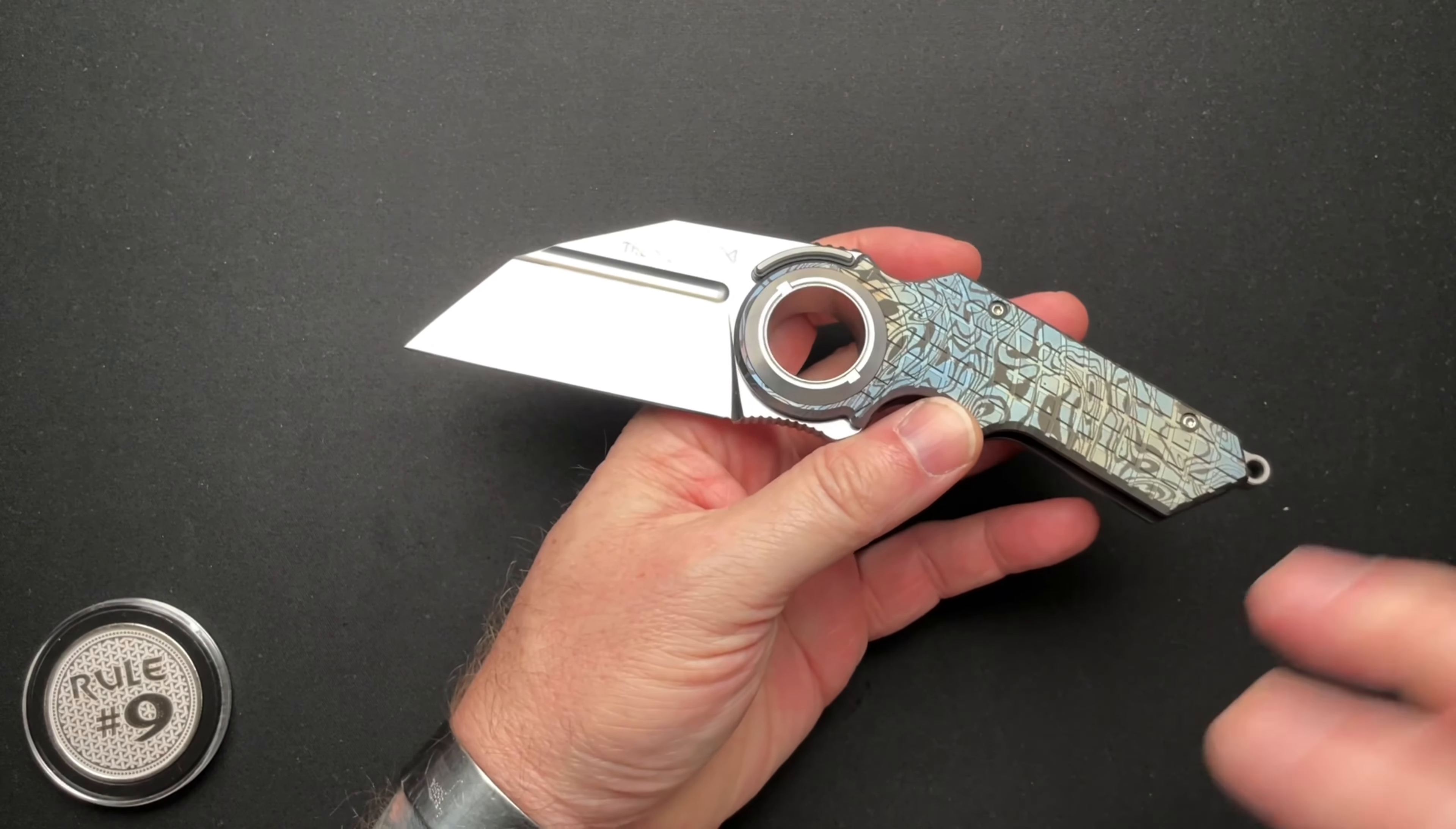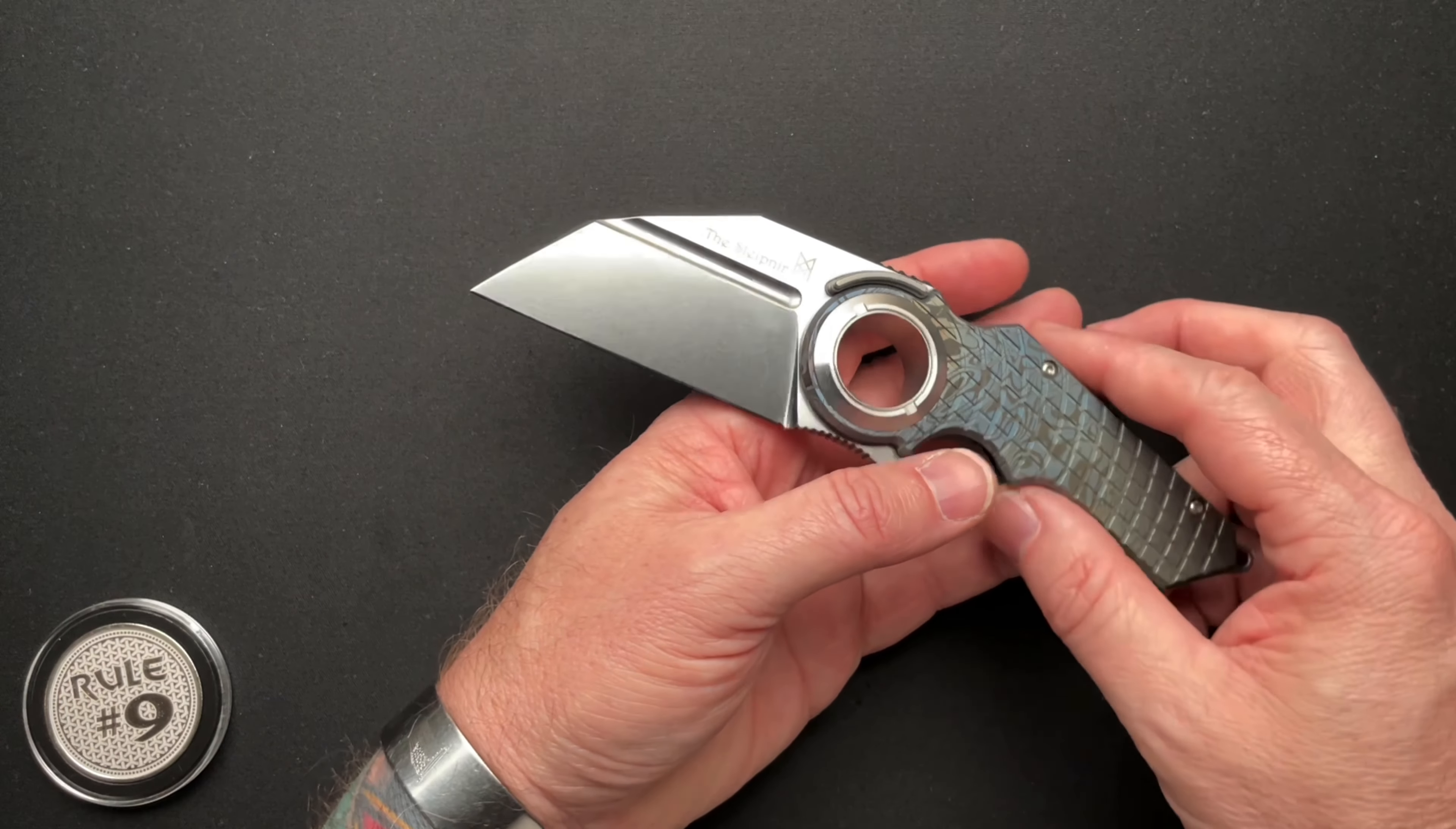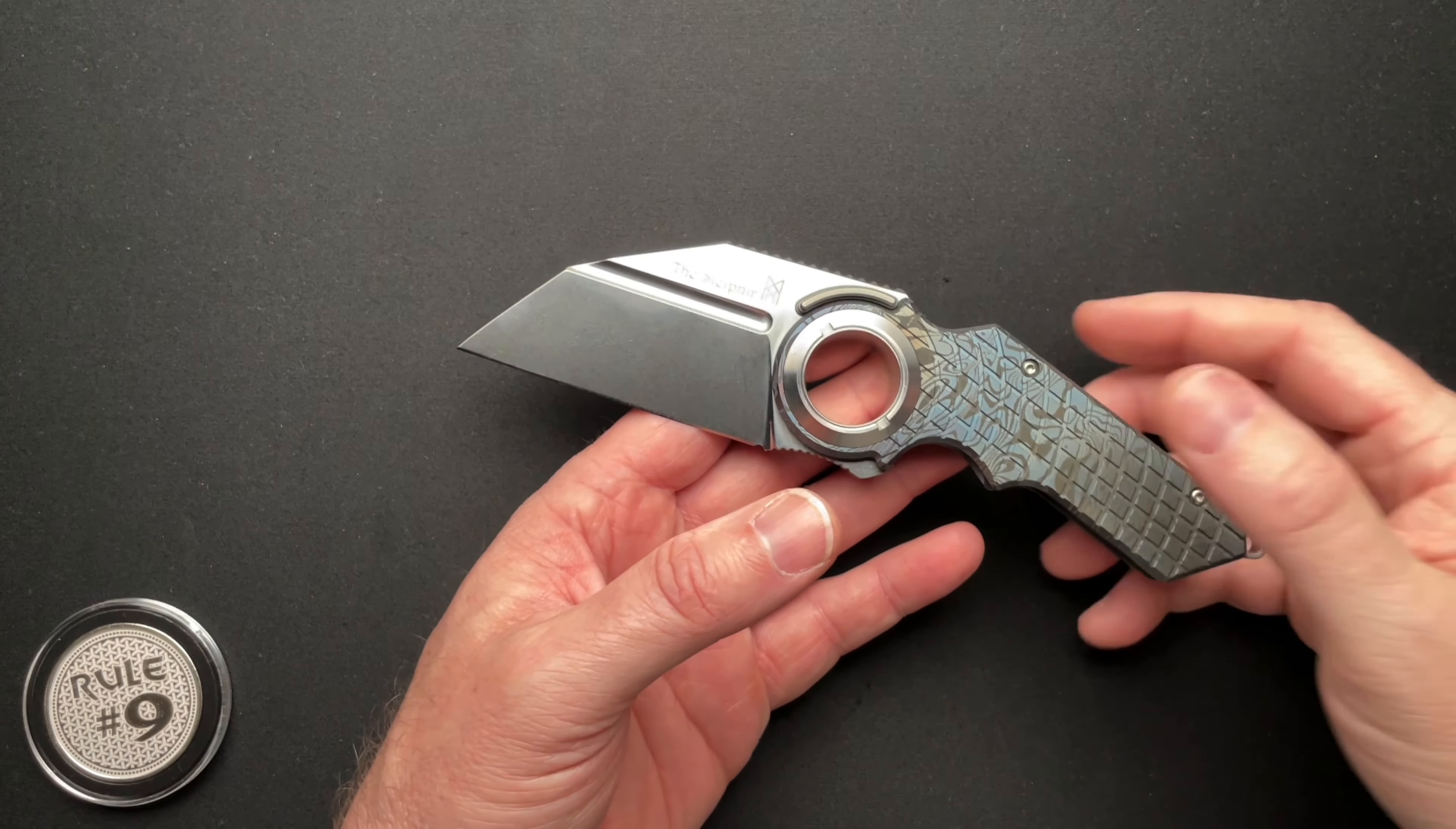So when a maker actually puts on their site that it is CPM D2 because they have to differentiate themselves from standard junk D2, I appreciate that. And I wish they would get rid of the old junky D2 and only have CPM D2.